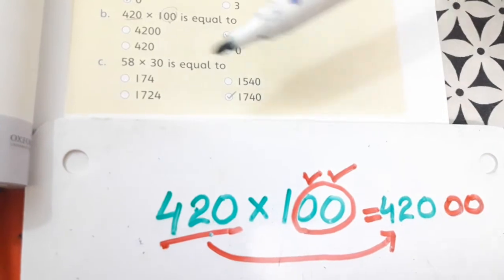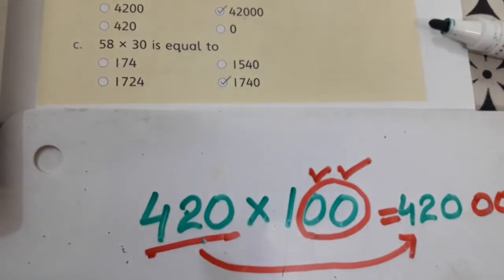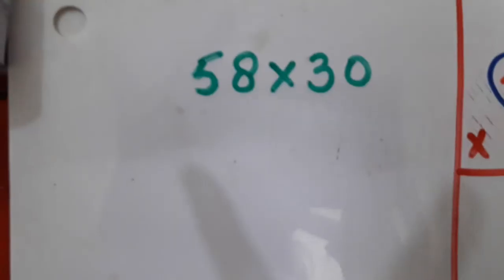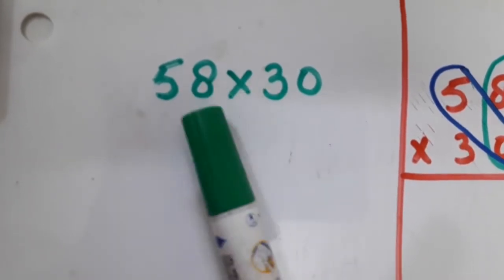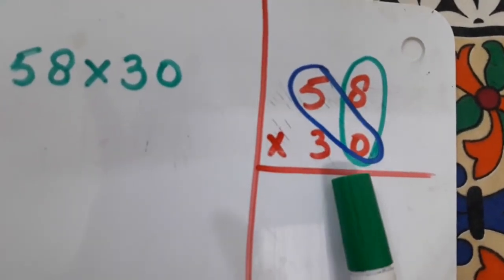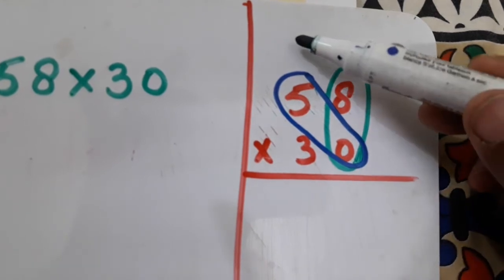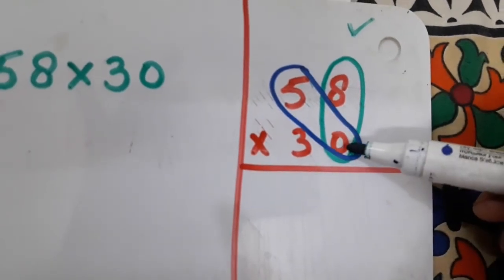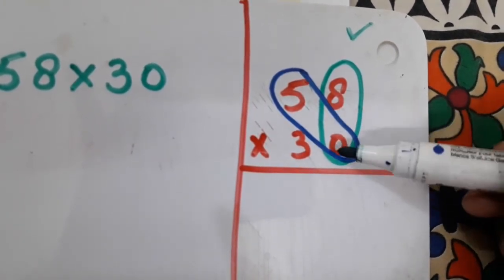Now move to the next one: 58 multiplied by 30 is equals to. We will first multiply both of these numbers and then see what the answer is. There are two ways to solve this question because there are two digits on both sides. We can write it like this: 58 × 30. First of all, we will start from the ones side. This is the ones side and this is the tens side. So first: 0 eights are 0.